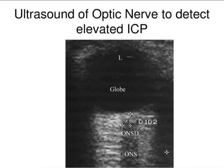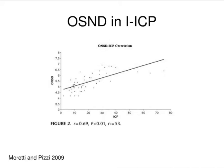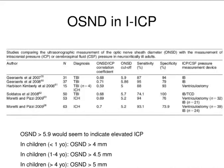And this is optic nerve ultrasound — this is kind of cool. You put the ultrasound over the eyeball with a slightly different probe, and you can measure the optic nerve sheath. If that sheath increases in size, it's supposed to indicate high intracranial pressure. Here's a paper with a reasonable correlation between intracranial pressure and optic nerve sheath diameter. Greater than about 5.5 millimeters optic nerve sheath diameter would seem to indicate raised intracranial pressure. Completely non-invasive.